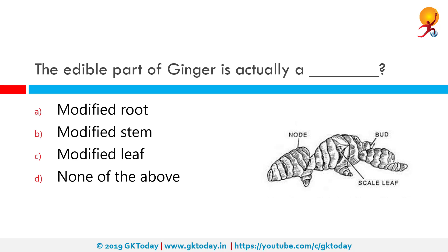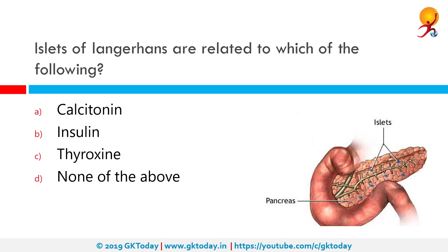The edible part of ginger is actually a modified stem. Ginger is a rhizome, which is a modified stem that grows horizontally underground and has nodes and internodes. Vertical shoots may rise from the buds of the rhizome of plants such as ginger and ferns.